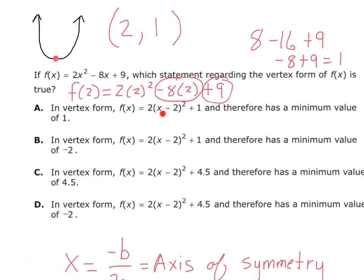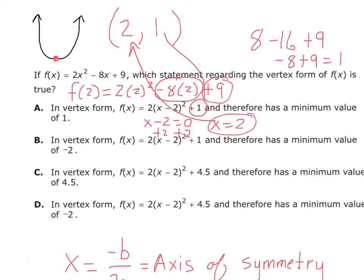In vertex form, whatever makes the inside of the parentheses equal to 0 is the x value, so we know it's 2. And then the constant gives us 1. So the answer is A. You take x minus 2, set it equal to 0, add 2 to both sides, and your axis of symmetry is 2. That gives you the axis of symmetry, and the number outside gives you your output — your y value. So we know we have a minimum value at 1, and the vertex form is this one because we calculated the vertex.